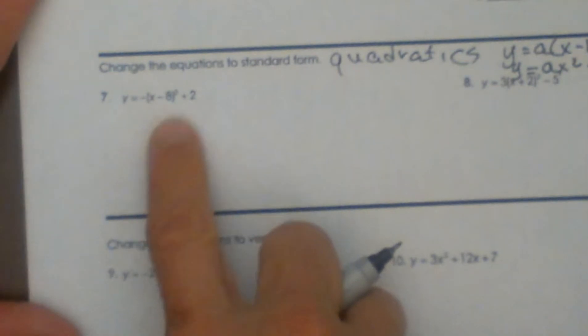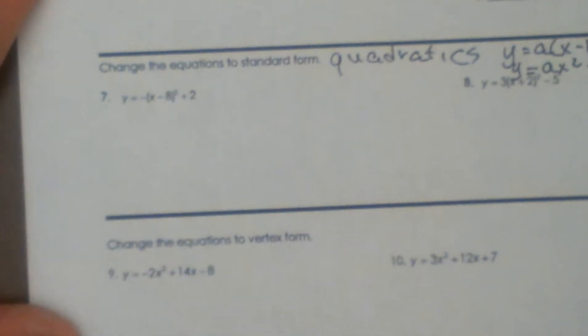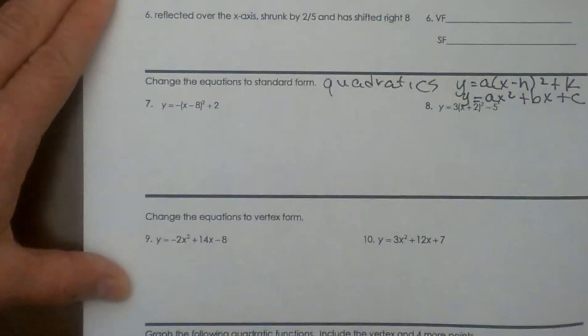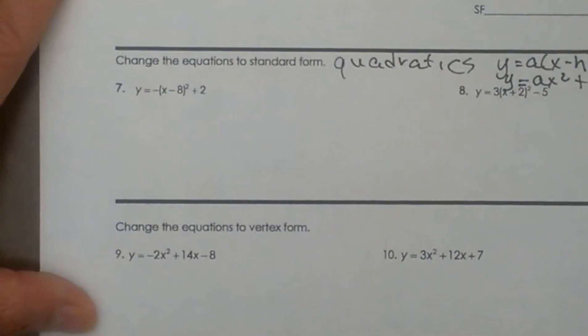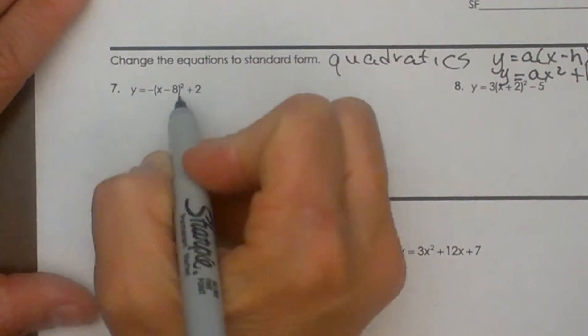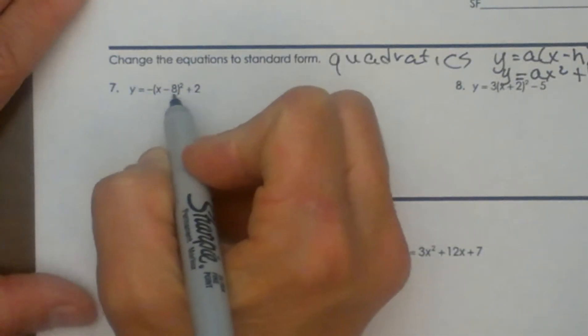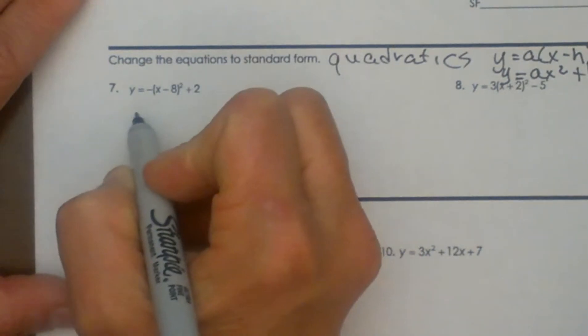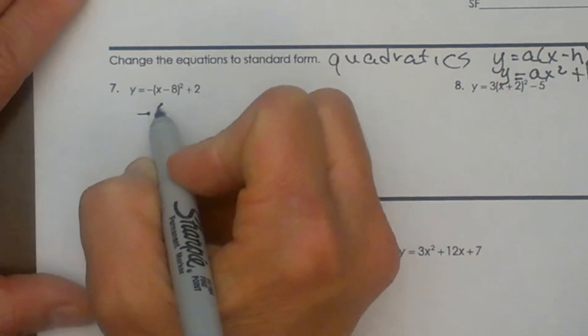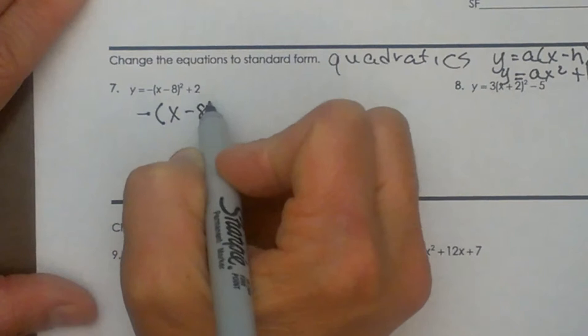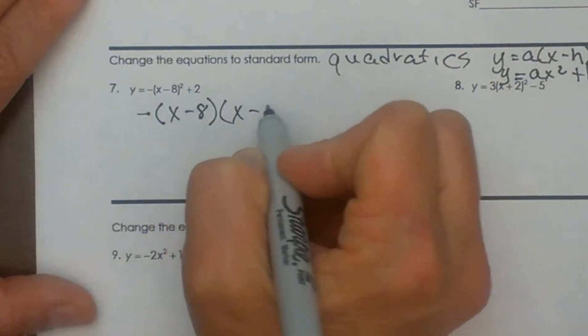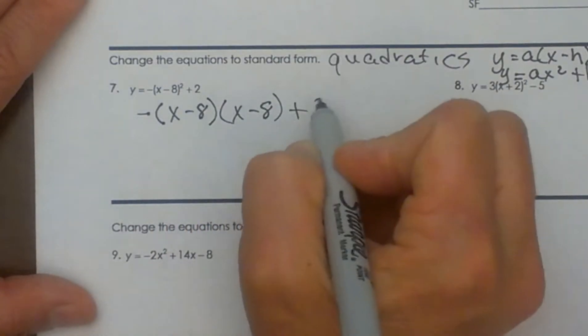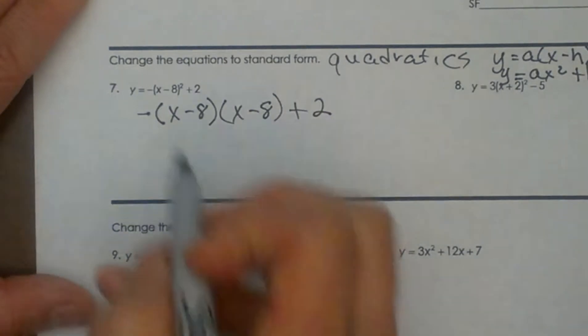As you can see, we have a perfect square, so we're in vertex form. We need to switch it. I'm going to FOIL or write out this (x - 8) twice because I'm squaring it. So I have the opposite, or negative, of (x - 8) times (x - 8) plus 2. I'm going to write out all my factors here.